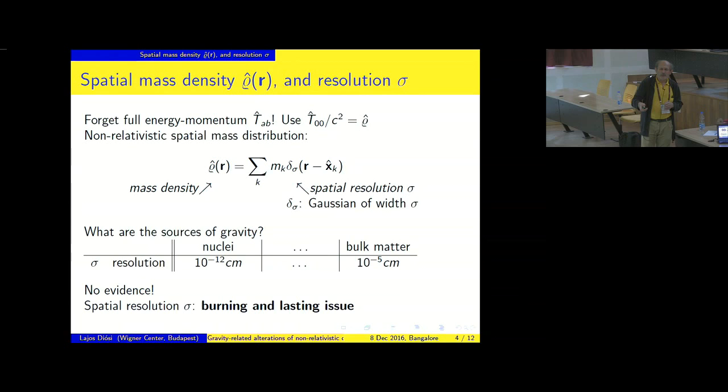Now, the first physical issue: what are the sources of gravity? If the sources are the nuclei, or whether the sources are just bulk matter. Accordingly, if the sources are individual nuclei, then the spatial resolution sigma must be set to somewhere about the nuclear size, 10 to the minus 12 centimeters.